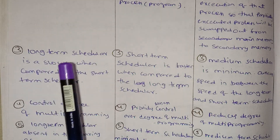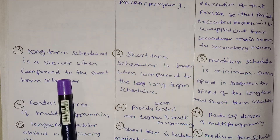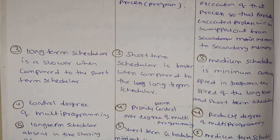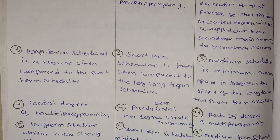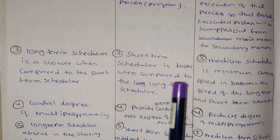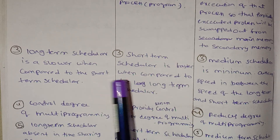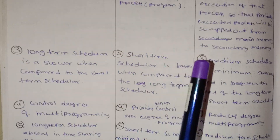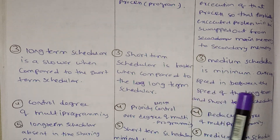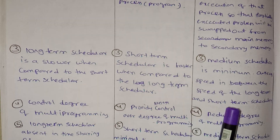Long Term Scheduler is slower when compared to the Short Term Scheduler. Short Term Scheduler is very fast when compared to the Long Term Scheduler. Medium Term Scheduler has a speed in between — an average speed between the speed of the Long Term and Short Term Schedulers.